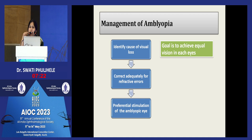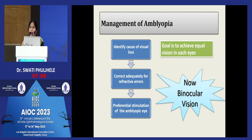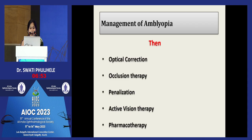The basic management of amblyopia remains: identify the cause of visual loss, correct the refractive error adequately, give preferential stimulation to the amblyopic eye, and achieve equal vision in each eye. With increasing focus on binocularity, the goal now also includes achieving some degree of binocularity. Optical correction is the standard first therapy. Occlusion therapy remains the gold standard, and penalization, active vision therapy, and pharmacotherapy are all part of the management spectrum.